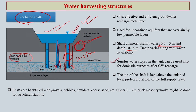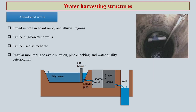Depth can vary along with water availability — the amount of water available on the stream will decide the depth of your shaft. Surplus water stored in the tank can also be used for various domestic purposes and groundwater recharge. The top of the shaft is kept above the tank bed level, preferably around half of the full supply level. Shafts are back-filled with gravels, pebbles, boulders, and coarse sand, and the top 1 to 2 meters normally has brick masonry work for stability.